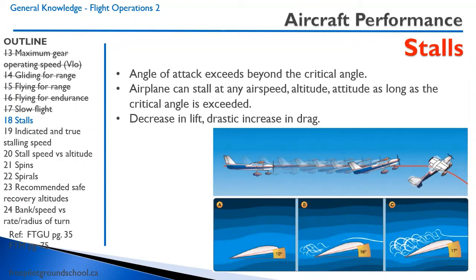An aerodynamic stall occurs whenever the angle of attack of the wing exceeds the critical angle. The angle of attack is the angle between the wing chord — the line from leading edge to trailing edge — and the relative airflow. When the critical angle is exceeded, the airflow over the wing is no longer smooth but becomes turbulent; lift suddenly decreases and drag increases. Remember that an airplane can stall at any airspeed, any altitude, and any attitude, as long as the critical angle is exceeded.